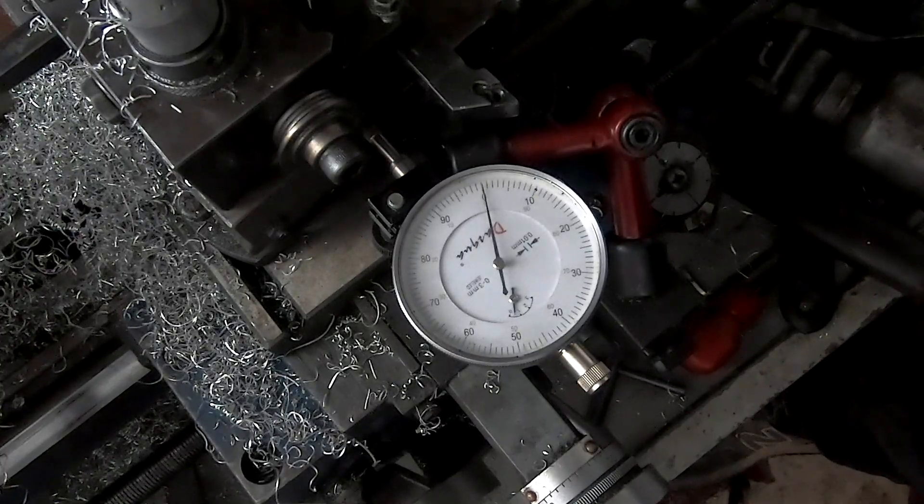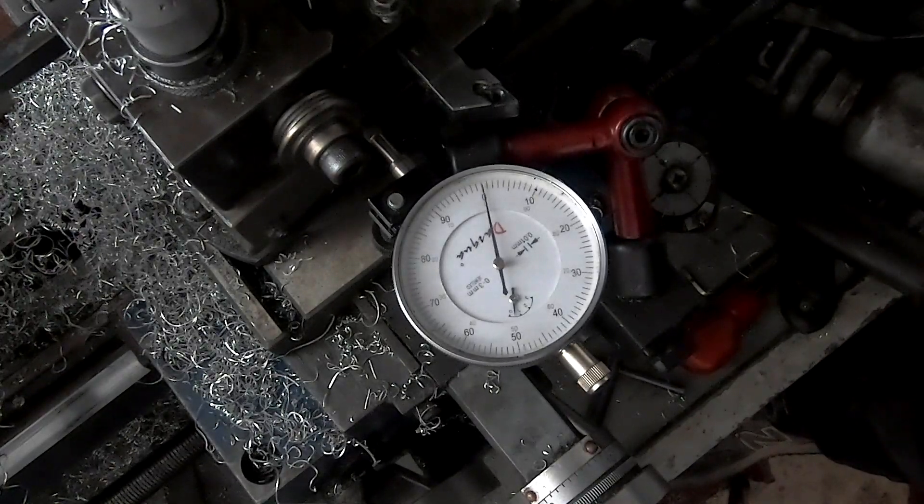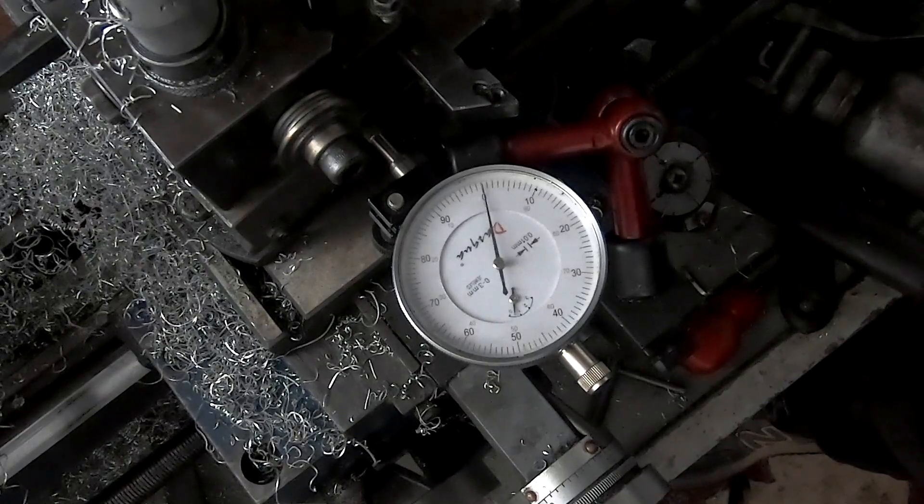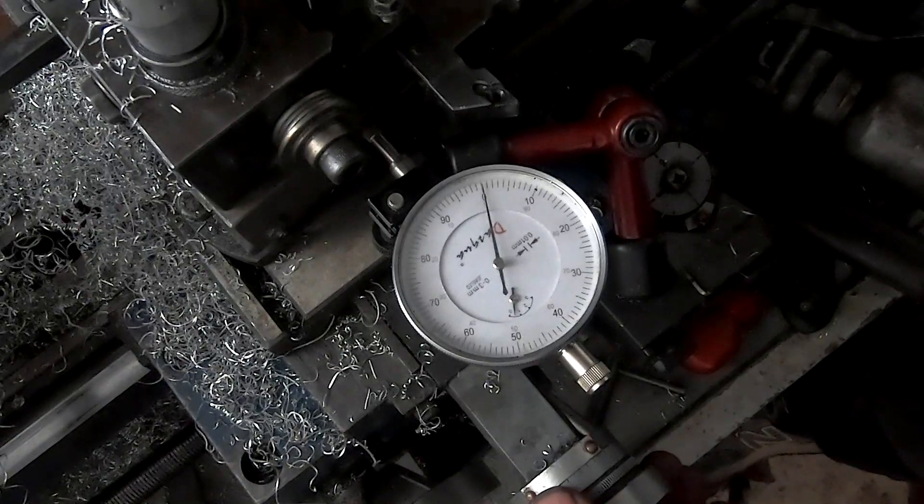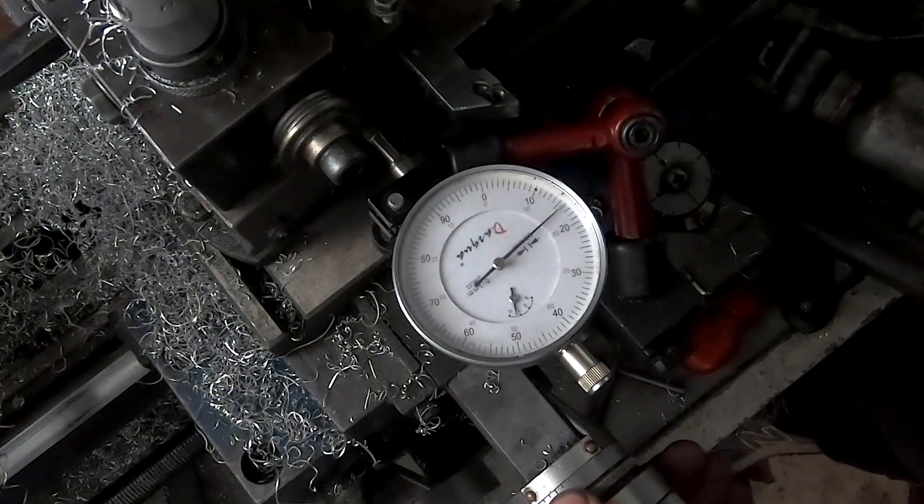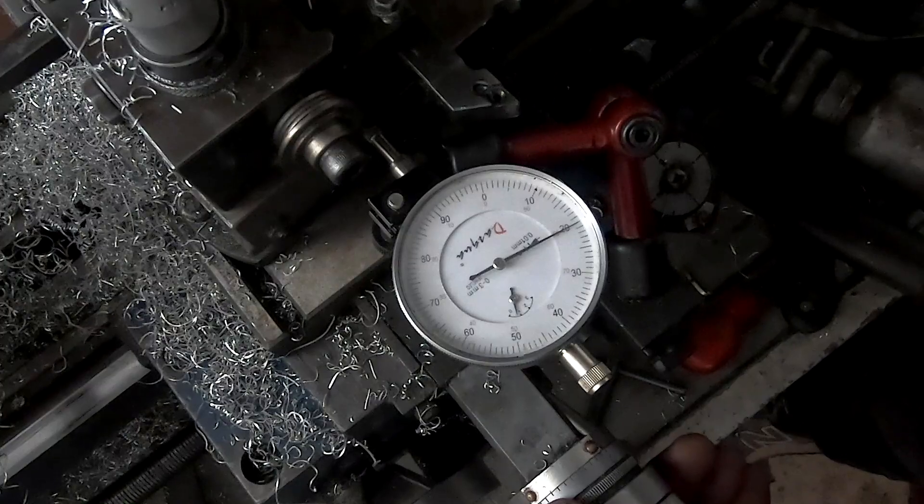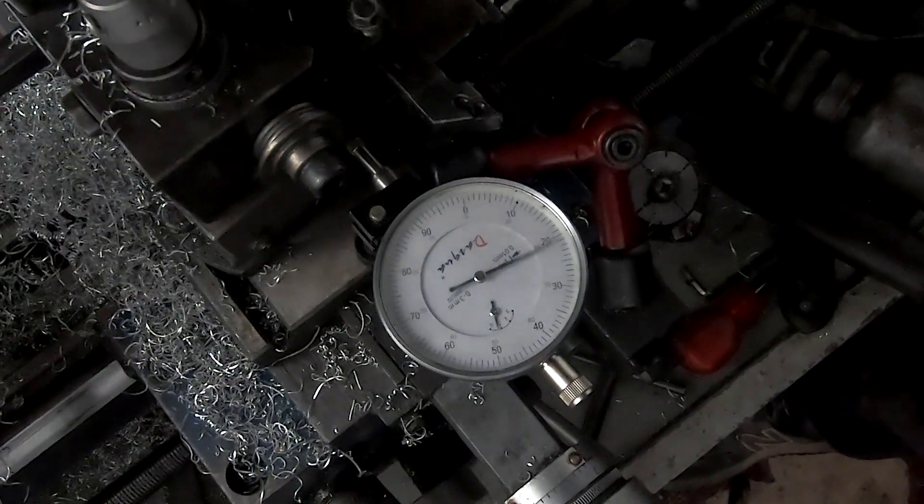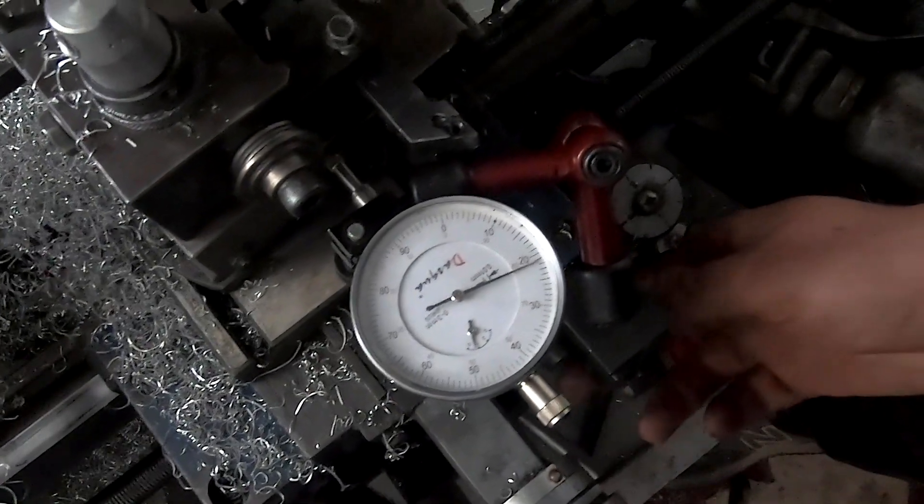That should give us, that should bring our dial bore gauge down to 0.44 off the dimension. So let's do 0.2, take a cut and see where that brings us to. So there we are, we're just bringing in 0.2. Let's switch back on the lathe and we'll take a cut.